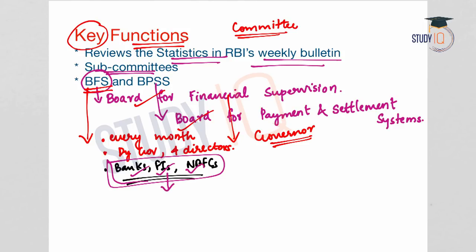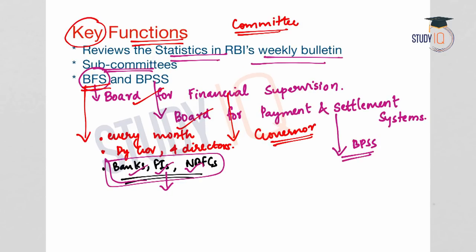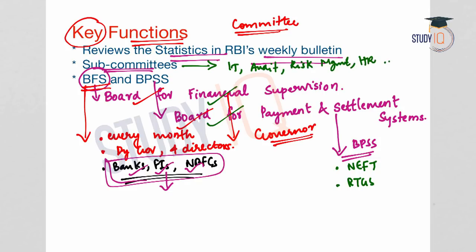The second important committee is BPSS — the Board for Payment and Settlement Systems — which takes care of paper-based and electronic systems like NEFT (National Electronic Funds Transfer) and RTGS (Real-Time Gross Settlement). There are also other subcommittees covering information technology, audit, risk management, and human resource management, but the two key committees are BFS and BPSS.